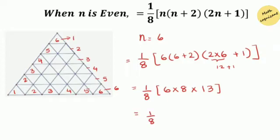48 times 13 equals to 624. Next step is to divide 624 by 8. The quotient will be 78. The next question I have used the odd number of triangles.